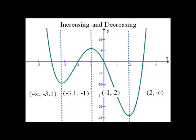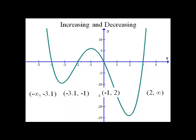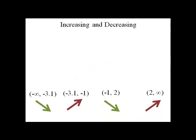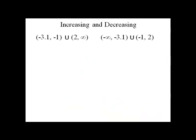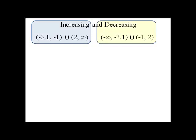Now, we have two places where it was increasing and two where it was decreasing, and we need to group those together. We're going to union those two distinct intervals together. So it's increasing from negative three point one to negative one, and also from two to infinity. It's decreasing from negative infinity to negative three point one, and also from negative one to two.